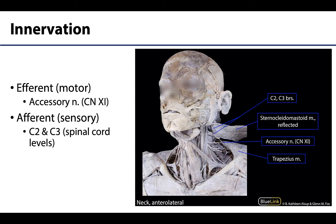The sternocleidomastoid muscle is efferently innervated by the accessory nerve, which you can see spanning between the sternocleidomastoid — reflected here — and the trapezius muscle. It will innervate both of those. Efferent is basically synonymous with motor innervation: messages sent from the central nervous system to an effector organ, in this case a muscle, sending signals that lead to muscle contraction. The accessory nerve is an entirely efferent nerve, with most fibers being efferent fibers.